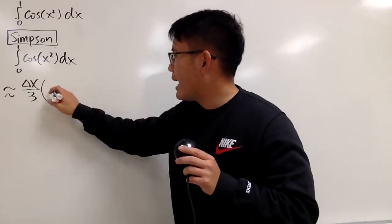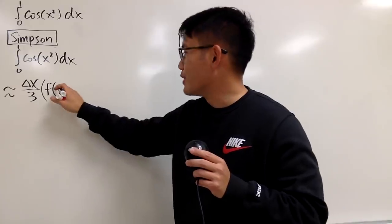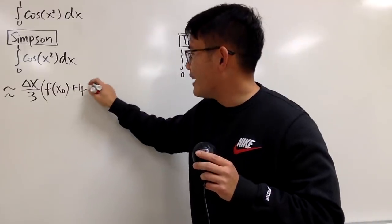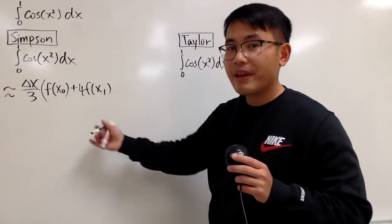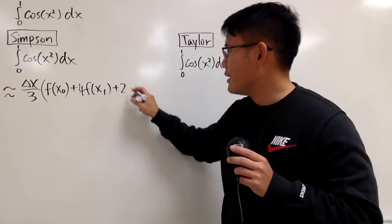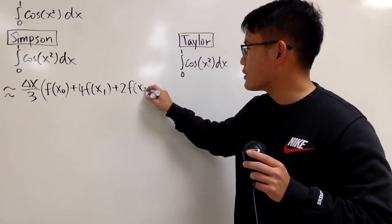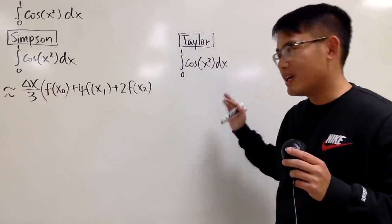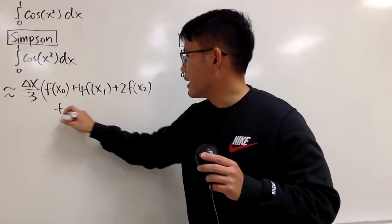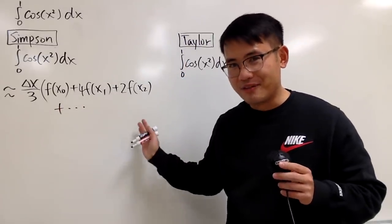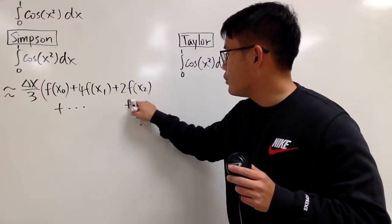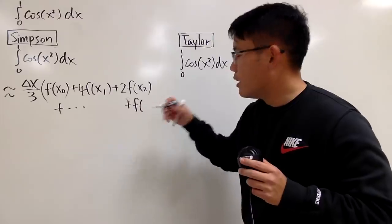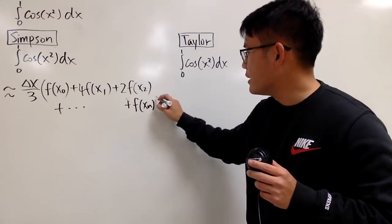Next, you are going to multiply by f of the first x value, which we write as x₀. Then you multiply by 4 times f at the next x value x₁, then you add 2 times f at x₂. The idea is that you begin at 1, then 4, 2, 4, 2, 4, 2, and so on. I'll put down plus dot dot dot, but it has to stop. This is only finite. When you have the last one, it's just going to be 1 as well, so f at the last x value xₙ.